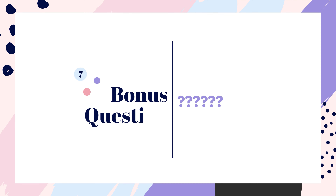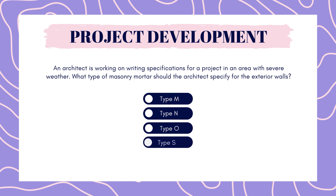And finally, our bonus question: an architect is working on writing specifications for a project in an area with severe weather. What type of masonry mortar should the architect specify for the exterior walls? Type M, Type N, Type O, or Type S? Pause here to answer.